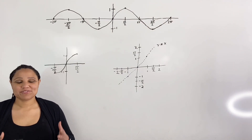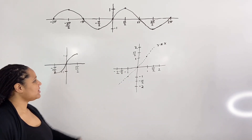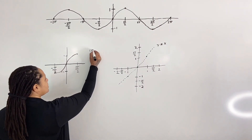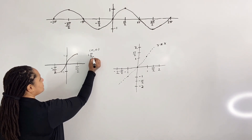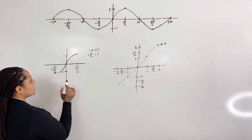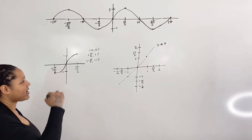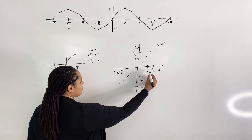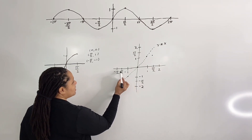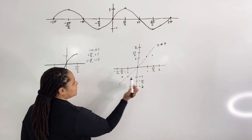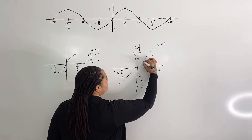Step three: draw the restricted graph of sine. We copy the restricted sine graph over, noting the key points: (0, 0), (pi over two, 1), and (negative pi over two, negative 1). Then we draw the curve through those points.